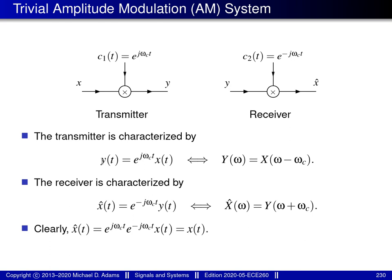Substituting the transmitter's formula for y into the receiver's equation, we find that the two complex sinusoidal factors cancel, leaving x-hat equal to x. In other words, the output of the receiver equals the input of the transmitter — the system behaves in the way that we'd like.